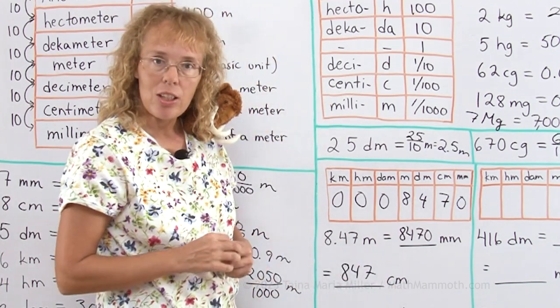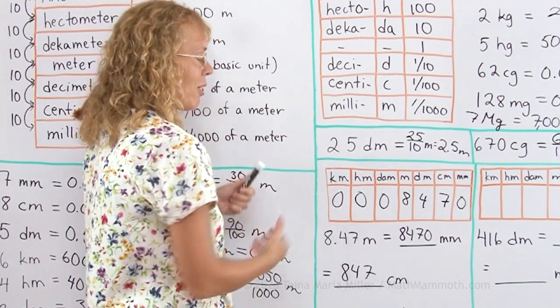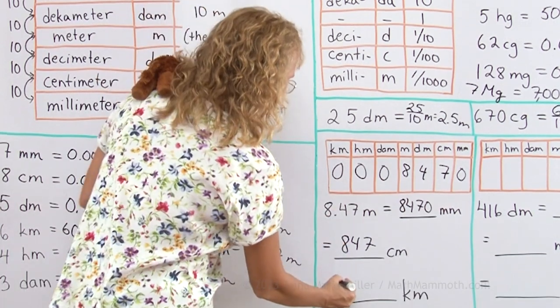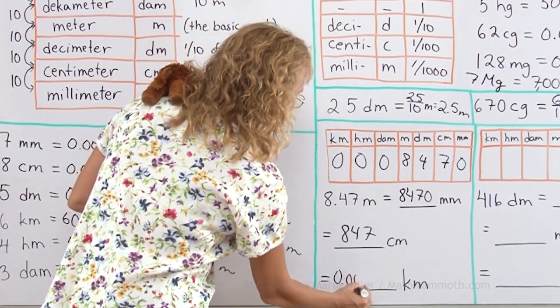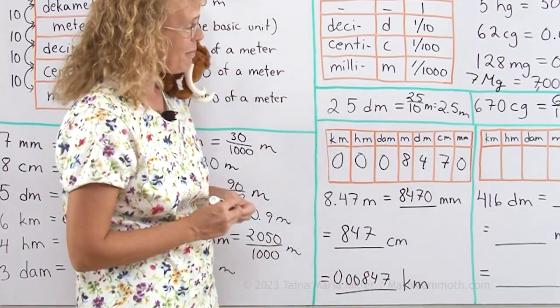And then reading it in kilometers, which usually you wouldn't do such a thing, but this table allows us to do it really easily. I put my decimal point here. So I would get 0.00847. There. It works.